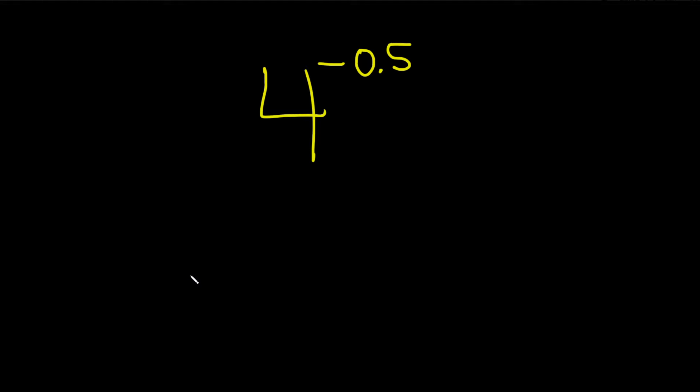You evaluate the expressions. We have 4 to the negative 0.5. So maybe as a good first step, we can turn this decimal into a fraction. Remember, a 0.5 is really 1 half. So this is negative 1 over 2.